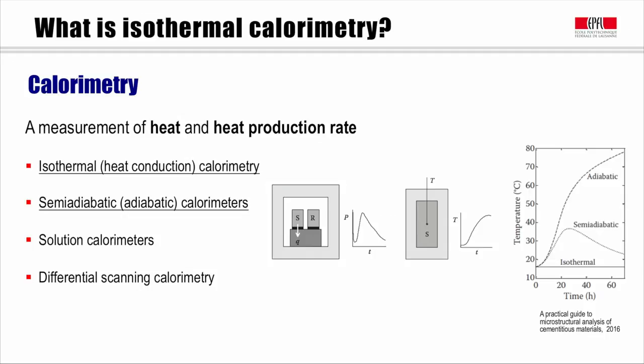Small samples such as cement pastes are commonly used in isothermal calorimetry while in others big samples like mortars and concrete are often used.